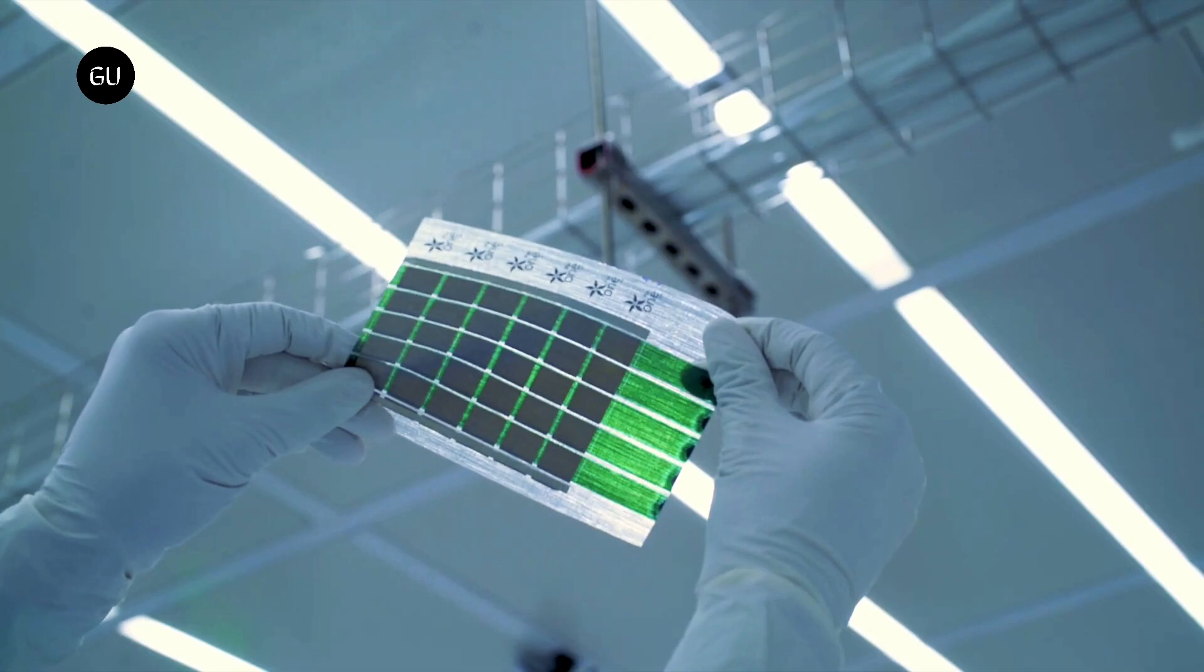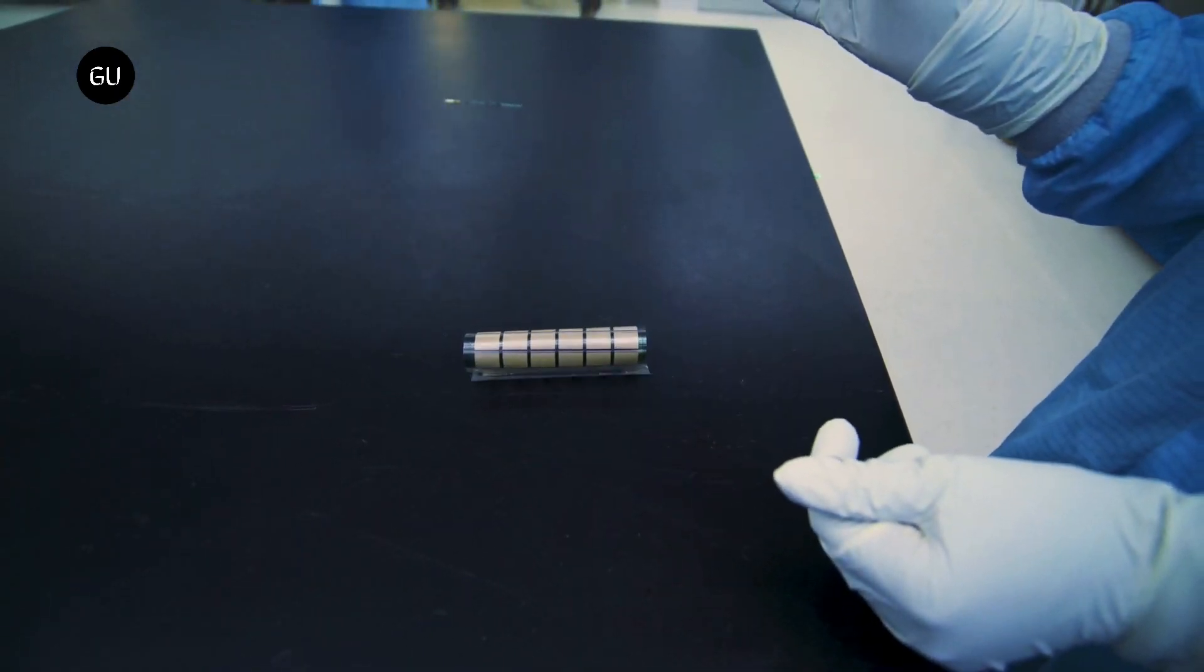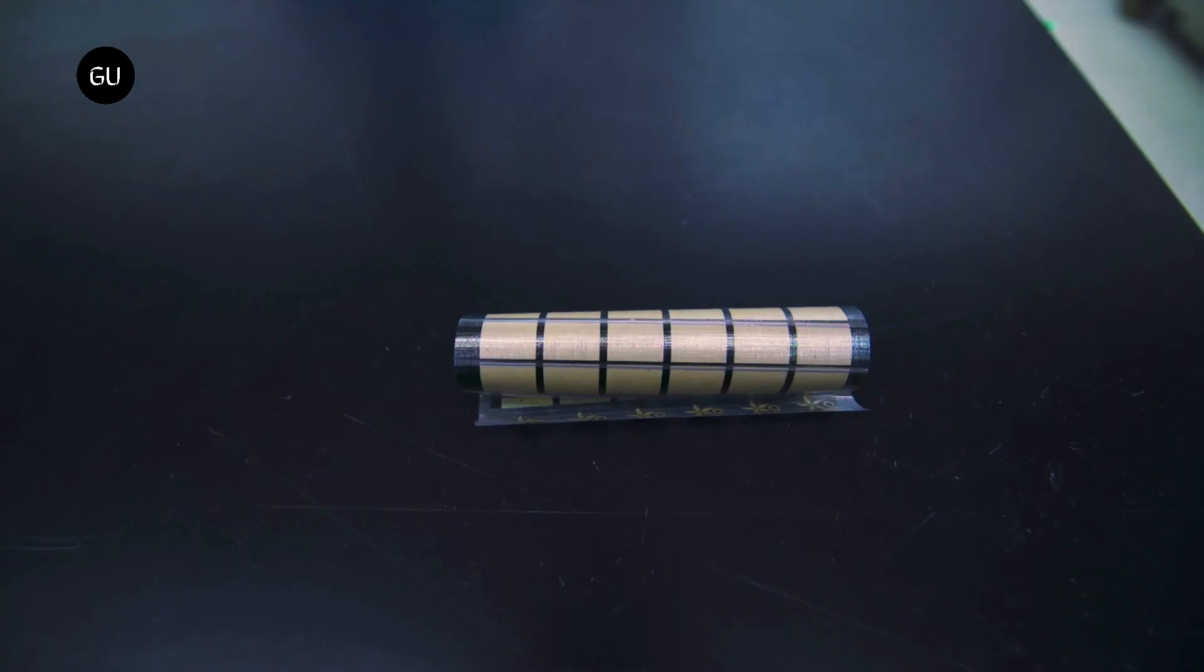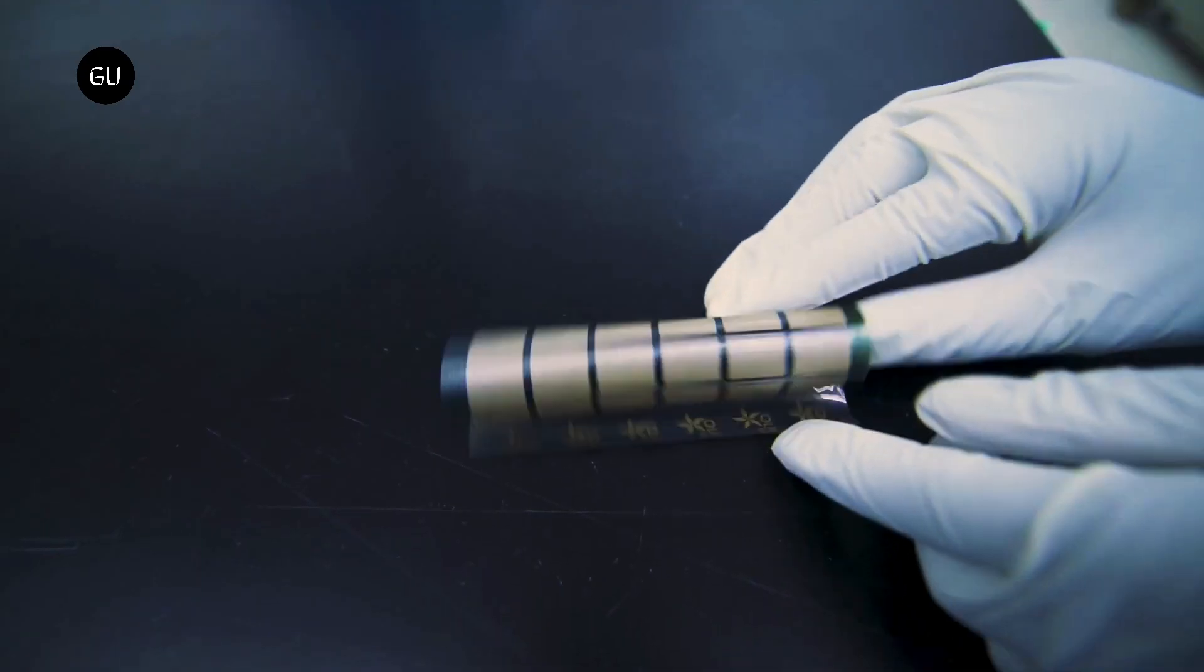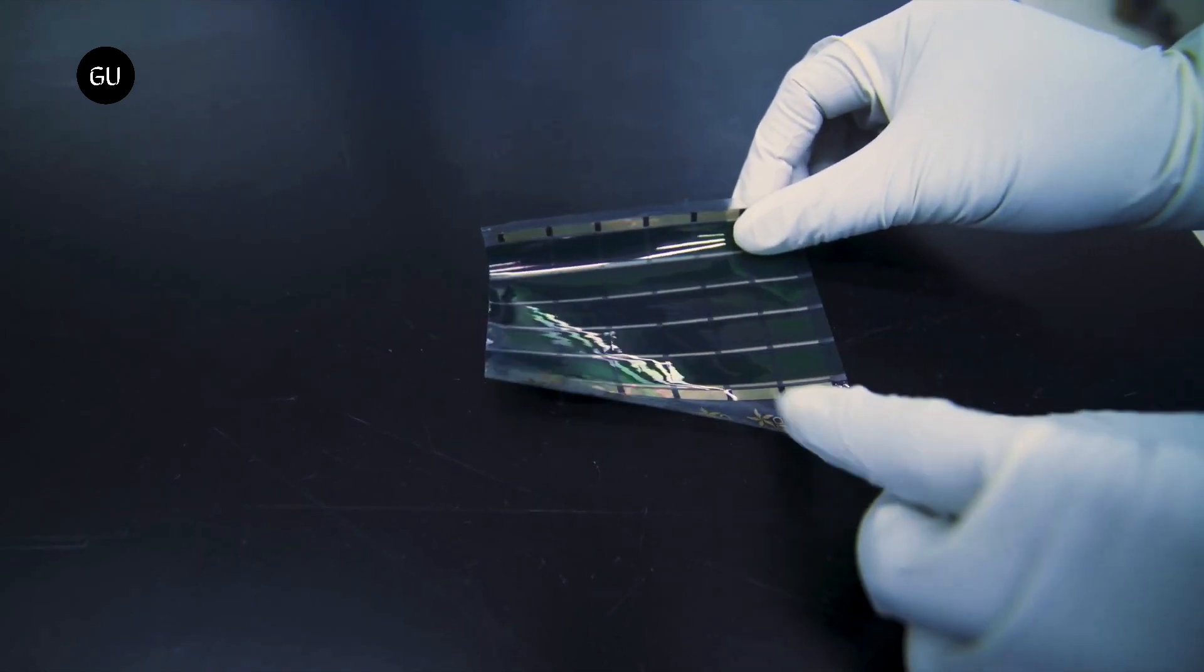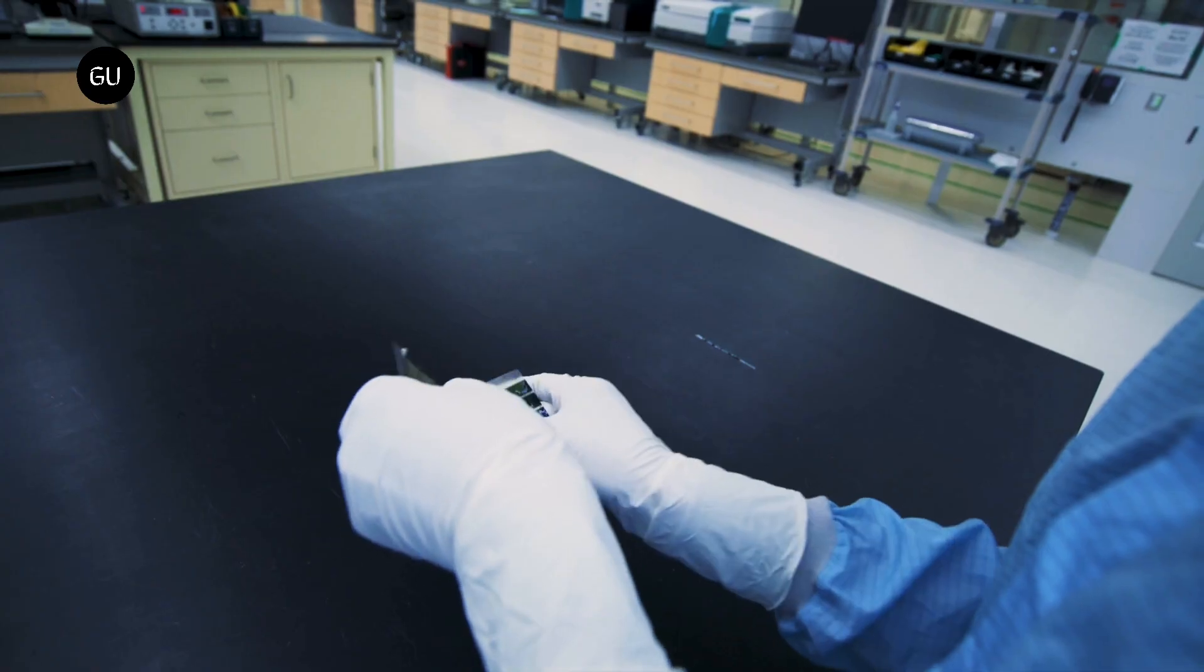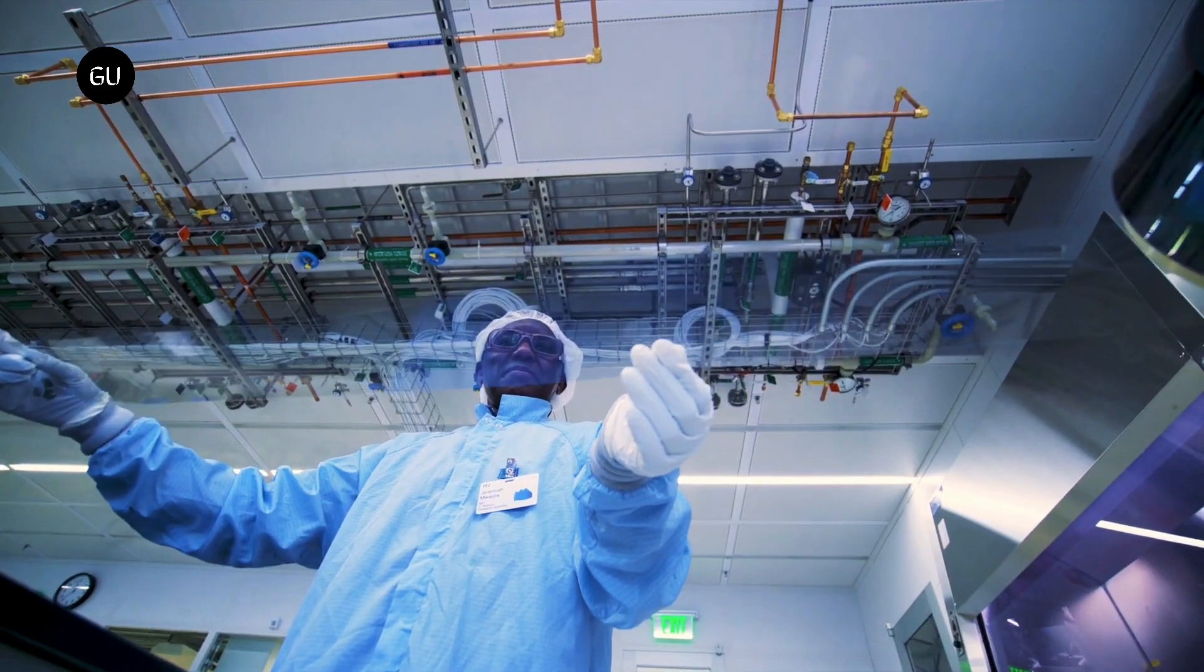They also tested the durability of their devices and found that even after rolling and unrolling a fabric solar panel more than 500 times, the cells still retained more than 90 percent of their initial power generation capabilities. While their solar cells are far lighter and much more flexible than traditional cells, they would need to be encased in another material to protect them from the environment.